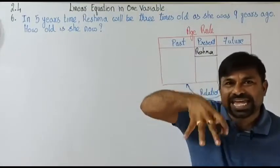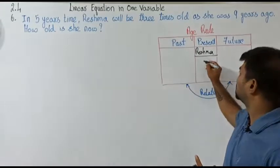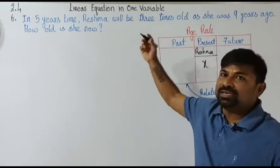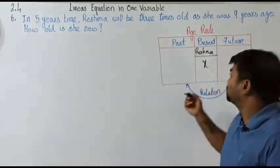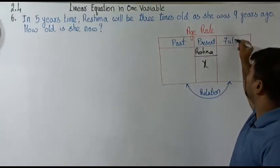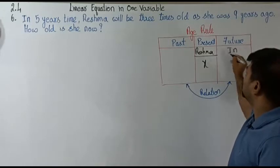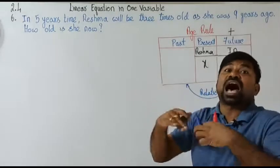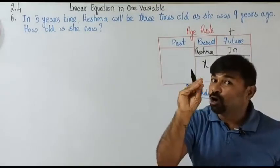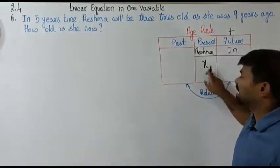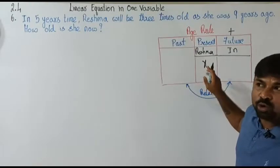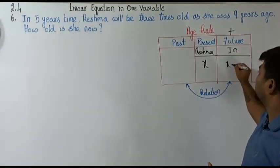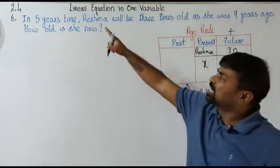We take the present age as x. So in five years — using the word 'in' means after five years. If Reshma's present age is x, then what will be her age after five years? Obviously it is x plus 5.